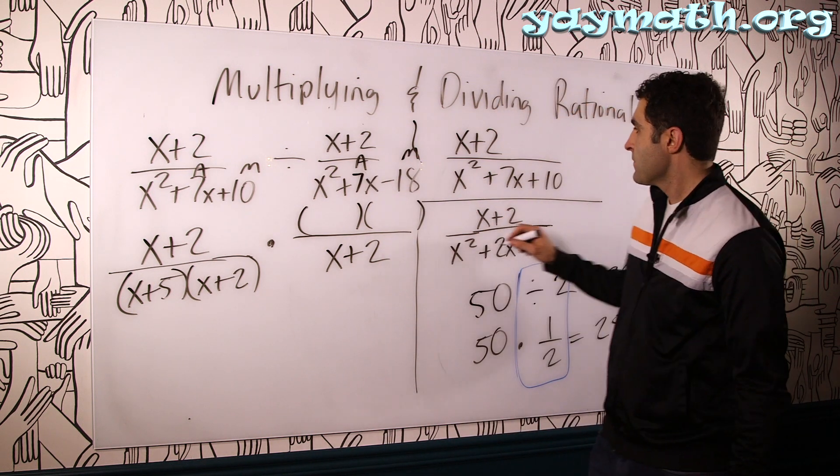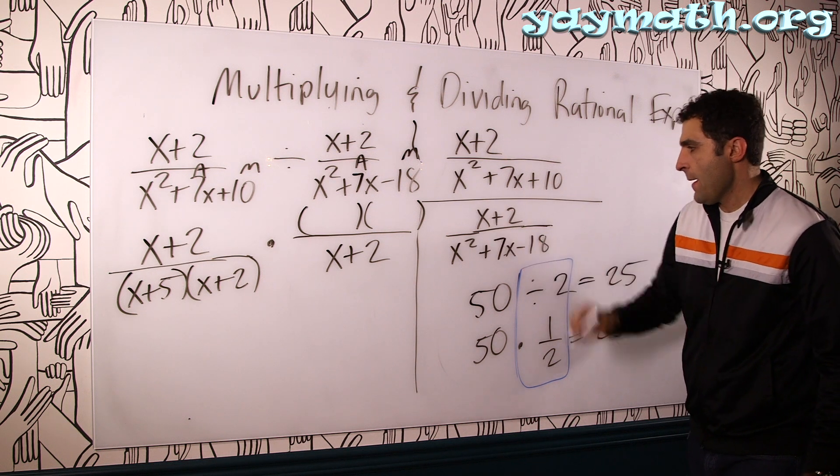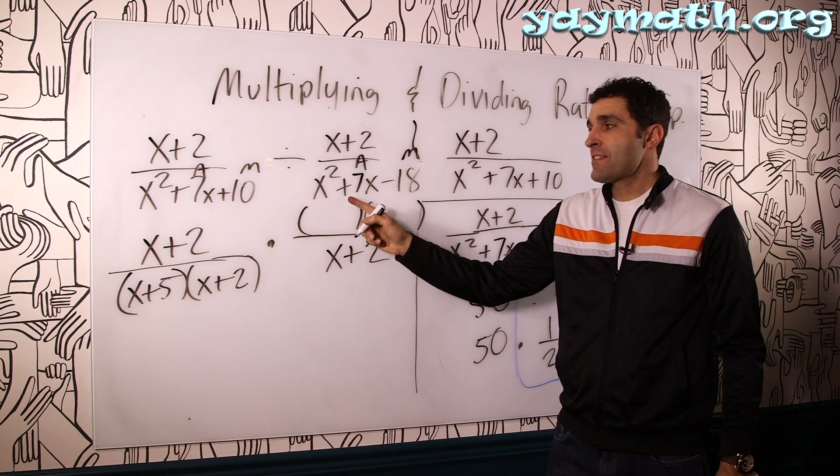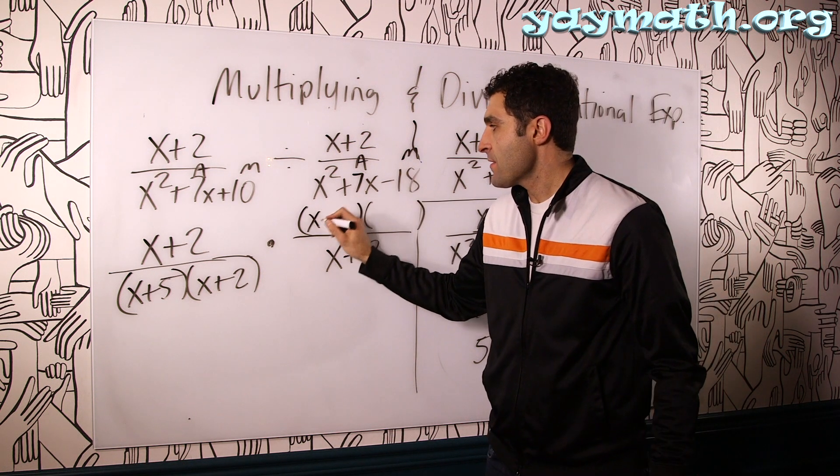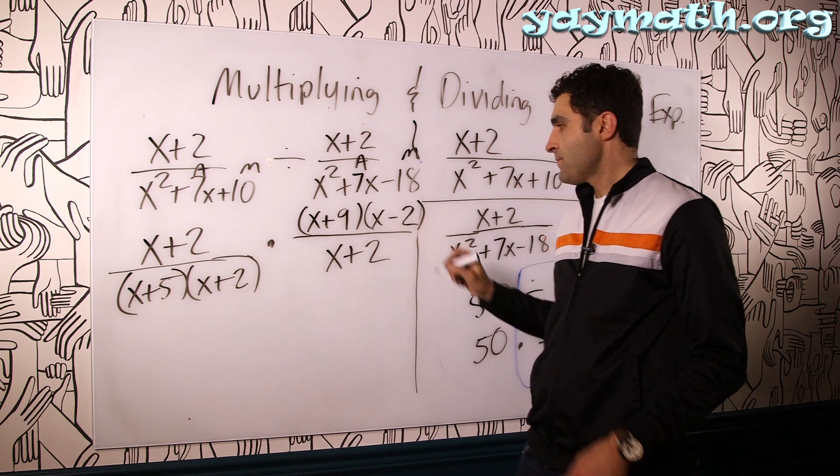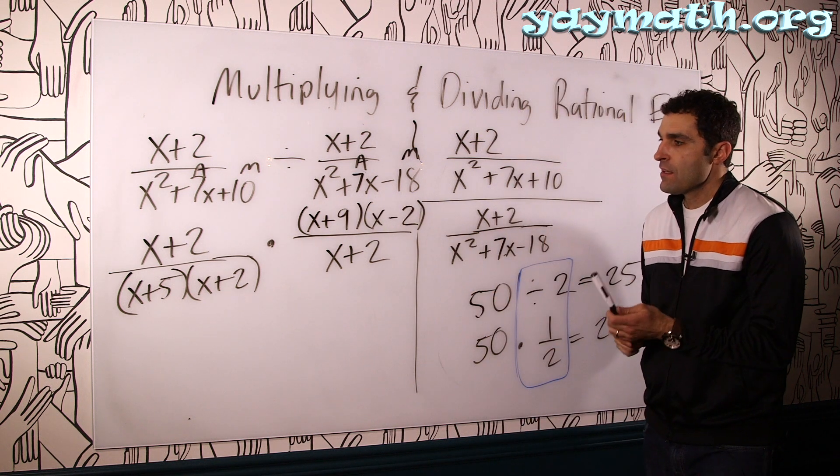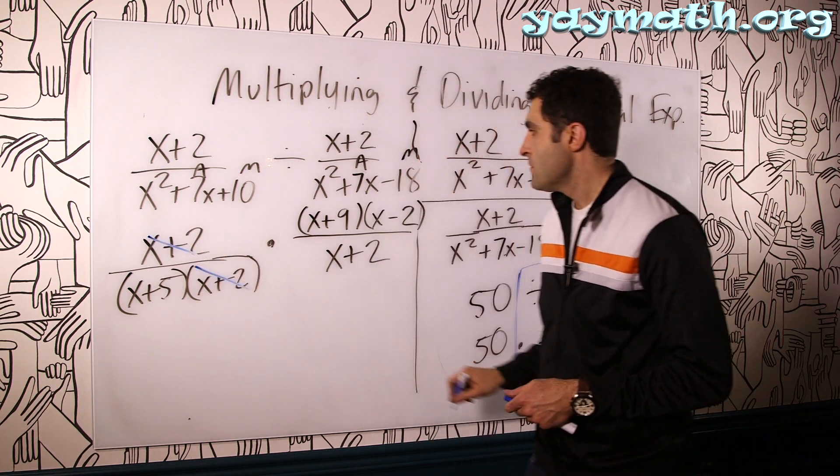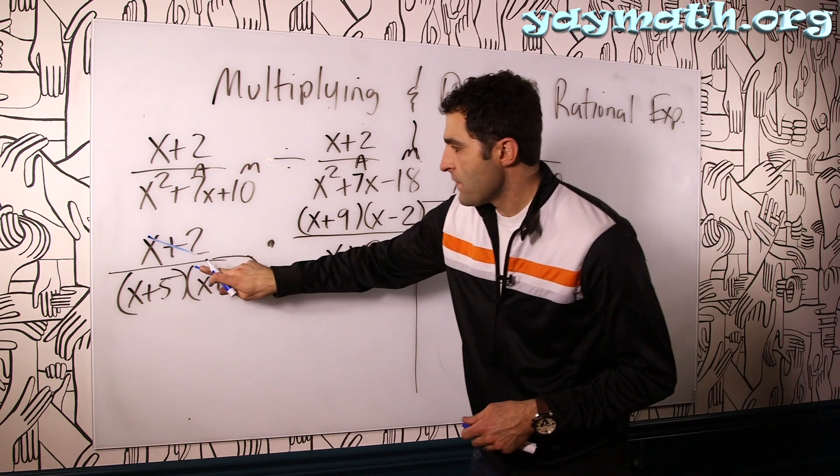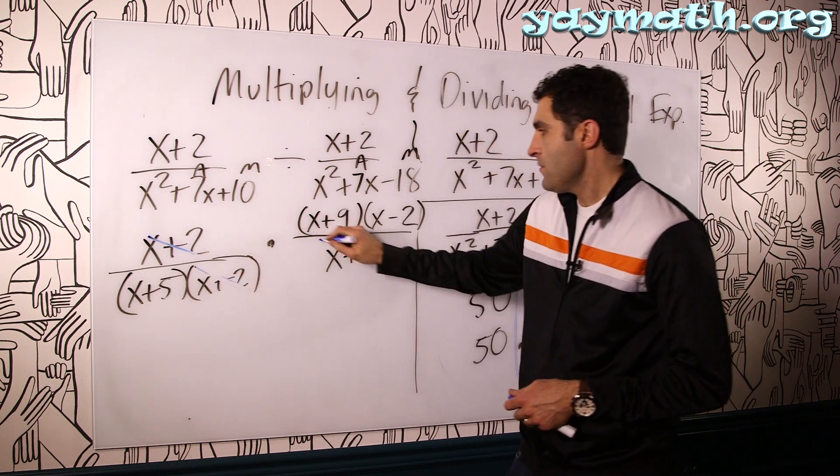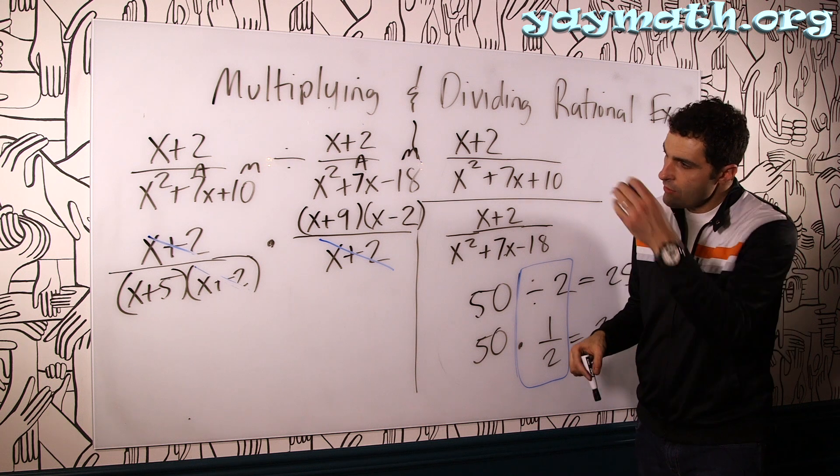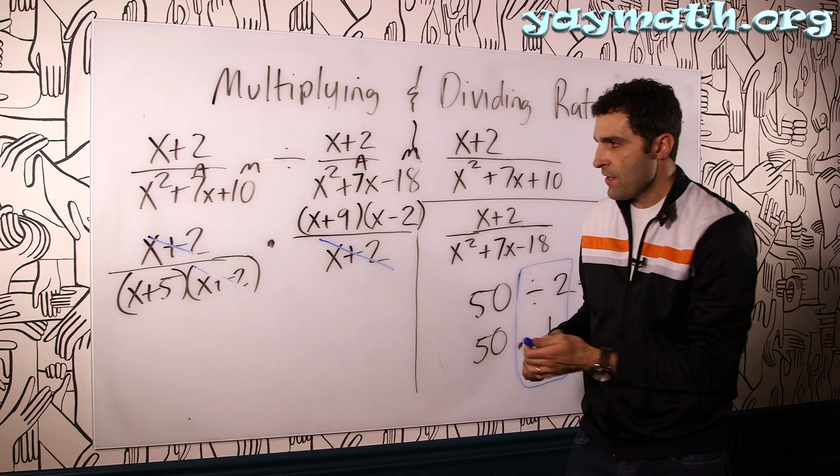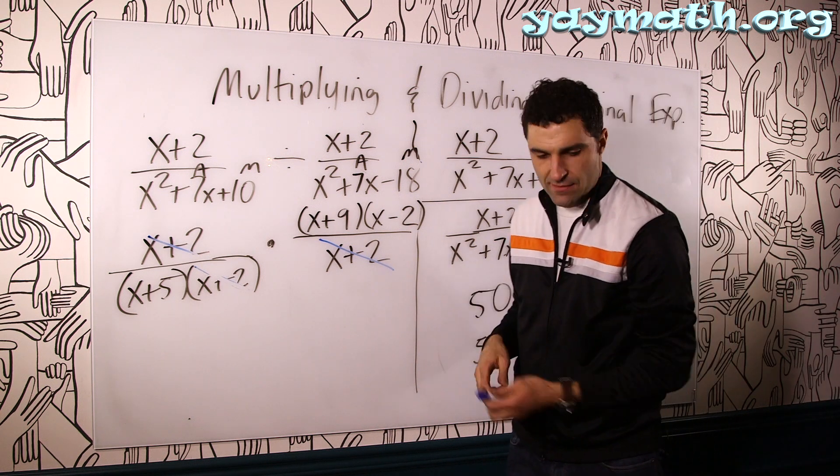So then that should factor. So now multiply to negative 18 and add to positive 7. That would be plus 9 and minus 2. So let's cancel. These can go. Or we could have done like this. These two. And over time, you might see other stuff that cancels. Things here and here. Those would cancel as well. But that's basically the idea. It's how to solve these.